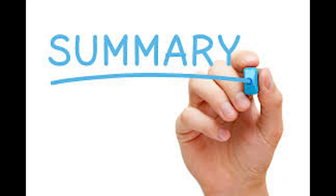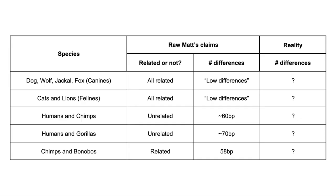So let's summarize Raw Matt's claims. He says DNA barcoding can be used to separate different created kinds, and gives examples where felines have very similar barcodes, canines have very similar barcodes that are distinct from other mammals, and there are clear differences between three distinct kinds of primates. Humans are their own kind, chimpanzees and bonobos are their own kind, and gorillas are their own kind. Nice and neat.